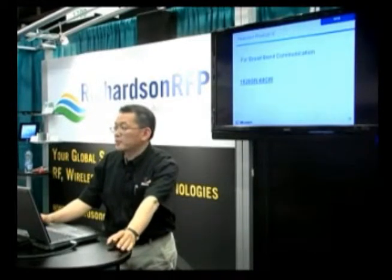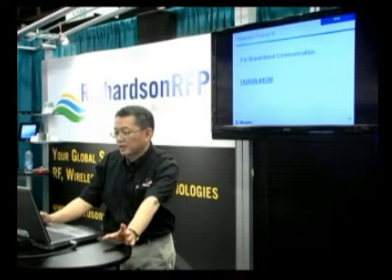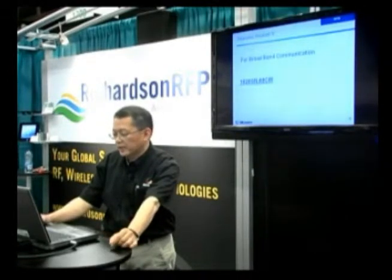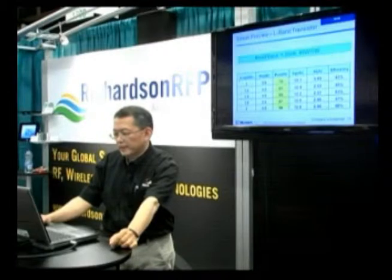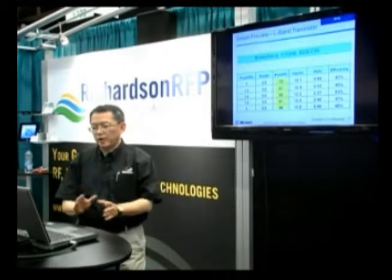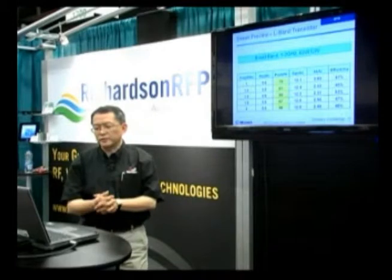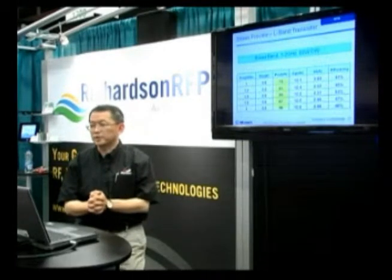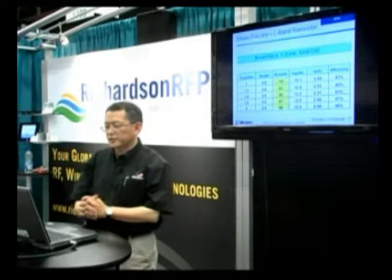We also have a broadband communications market targeted with our GaN devices. The first device covers 1 to 2 GHz octave band — 60 watts CW. A single device reaches about 60 watts broadband with 13 dB gain and 40% efficiency in CW mode.